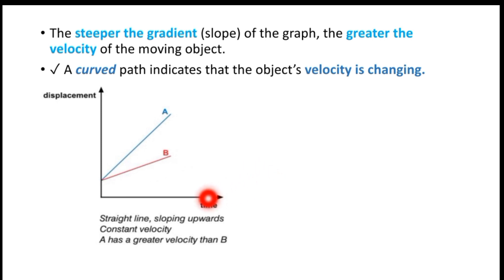Line A has a greater velocity than line B because it has a steeper gradient. The steeper gradient means greater velocity. A straight line with constant gradient means constant velocity throughout the motion.